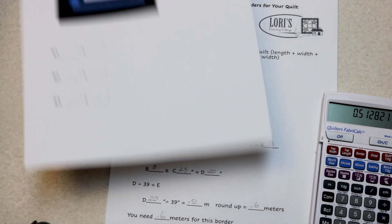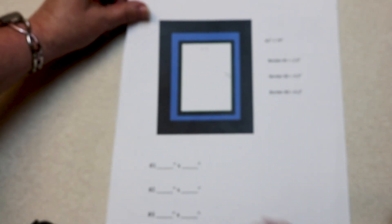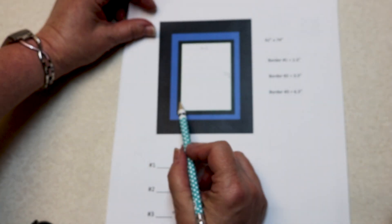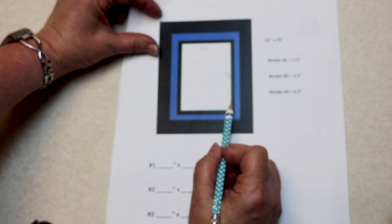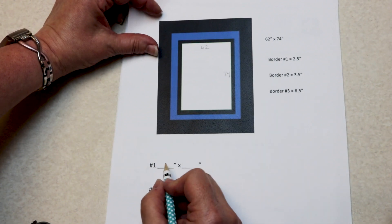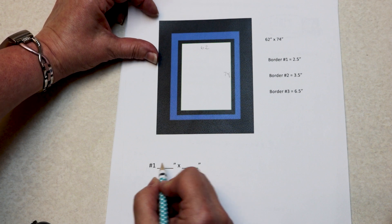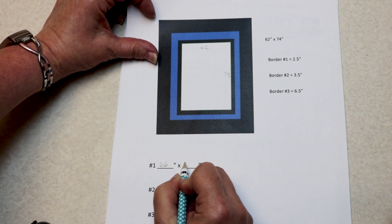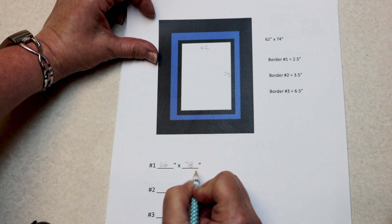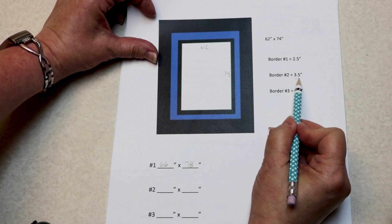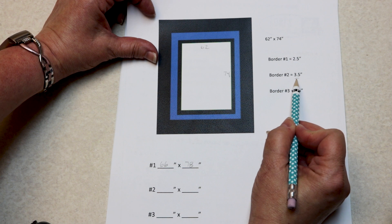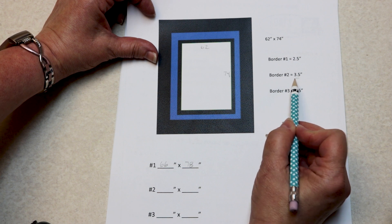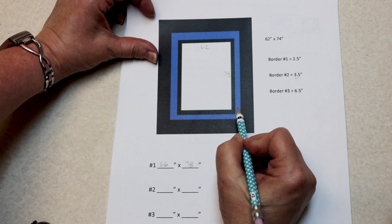We've added a two inch border to our quilt—two inches on each side. Now my quilt measures 62 plus 2 plus 2, that's 66 inches, and the length also grew by 4 inches—it's now 78 inches. And the next border I want to add is cut at three and a half, so a three inch border.